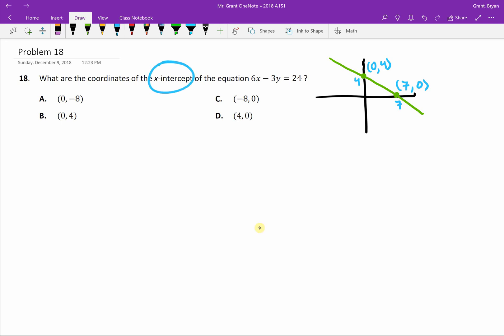So if we're looking for the x-intercept and we think about what an x-intercept is, an x-intercept is going to be any time that the y is 0. So the trick for this to find our x-intercept is all we're going to do is take the original equation.